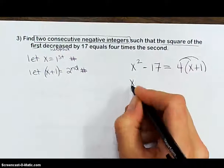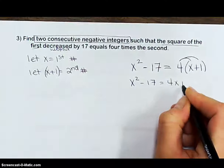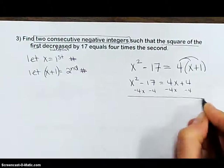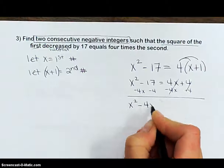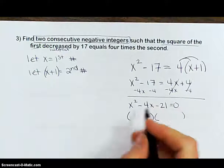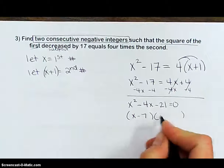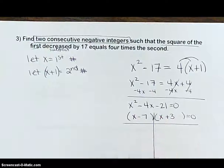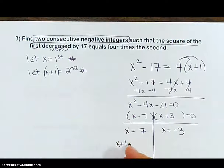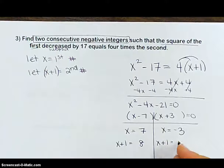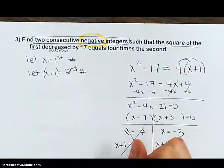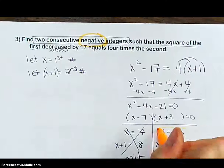Solving: x squared minus 4x minus 21 equals zero. We need two numbers that multiply to negative 21 and add to negative 4: negative 7 and positive 3. Factoring: (x minus 7)(x plus 3), giving x equals 7 and x equals negative 3. For x equals 7, x plus 1 gives 8. For x equals negative 3, x plus 1 gives negative 2. Since the problem wants negatives, the final answer is negative 3 and negative 2.